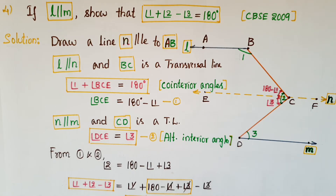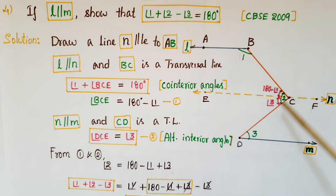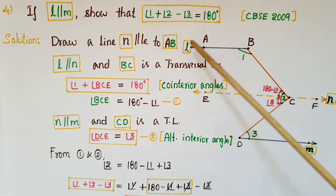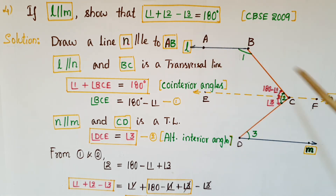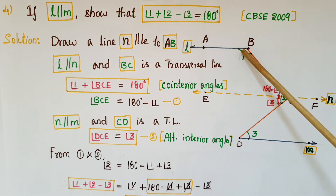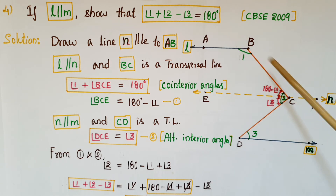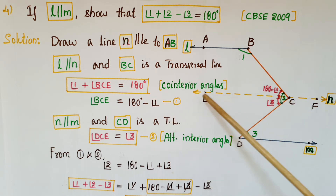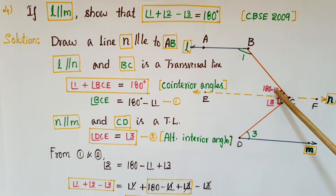The next problem: if l is parallel to m, show that angle 1 + angle 2 − angle 3 = 180 degrees. First, draw a line N parallel to l, so l is parallel to N, and BC is the transversal. These two angles are co-interior angles, so angle 1 + angle BCE = 180 degrees, giving angle BCE = 180 − angle 1. This is equation 1.